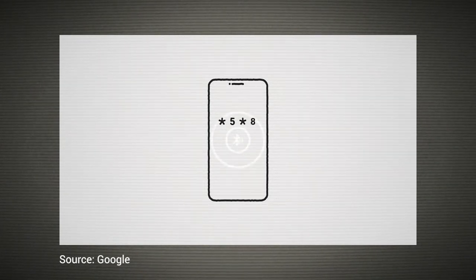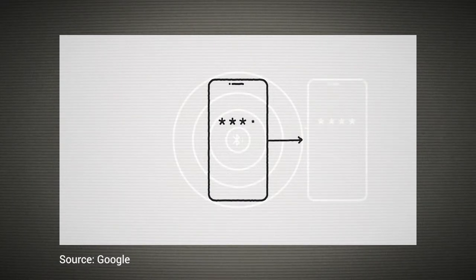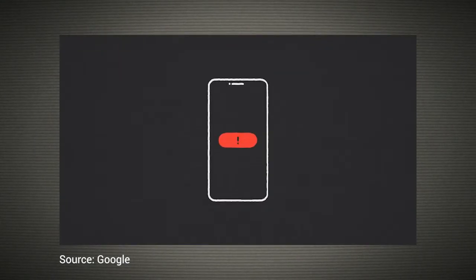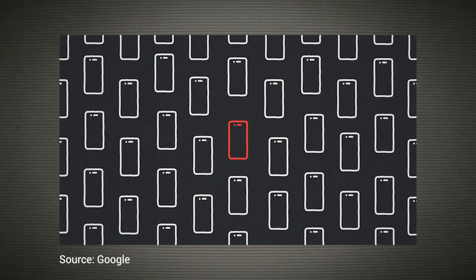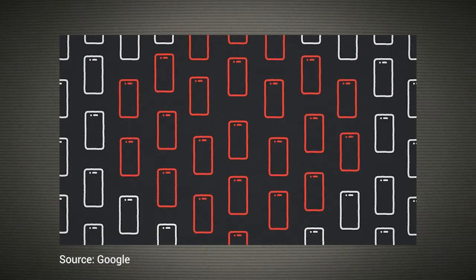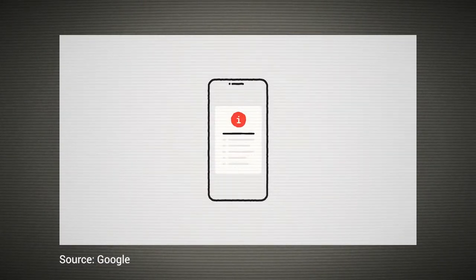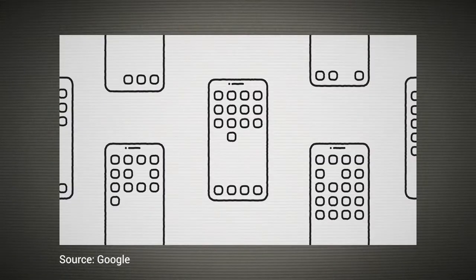They said — and they were very clear about this — that they were going to do it in a way that respects user privacy. They wrote a lot of white papers. Our own Steve Gibson looked at the white paper and was very impressed by the techniques they used. The whole idea of the API is it doesn't ever reveal who you are to anybody, especially cell phone companies or the government.